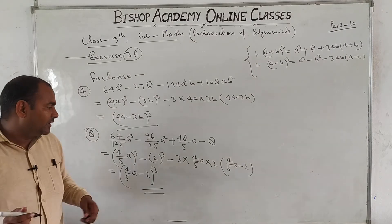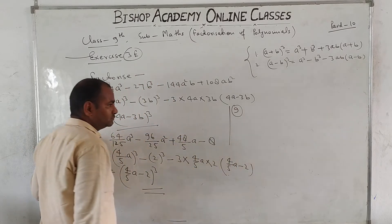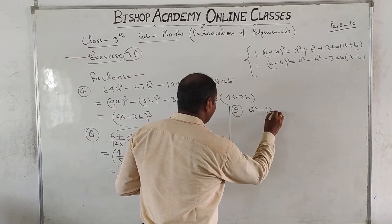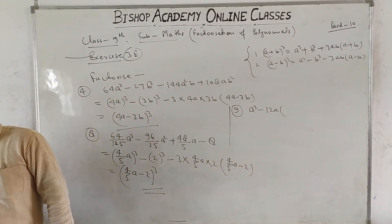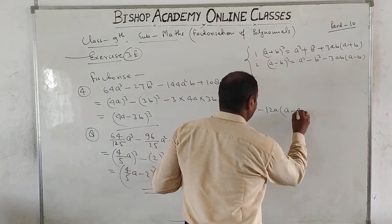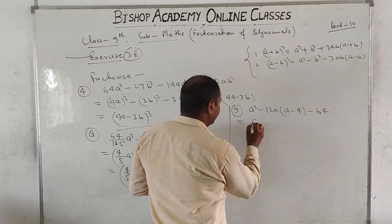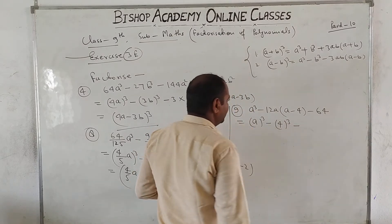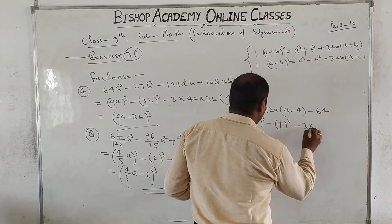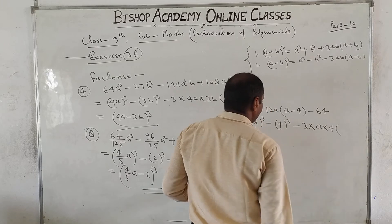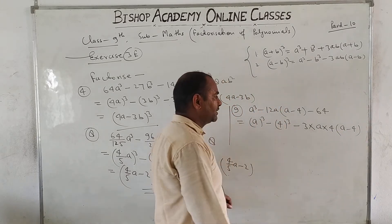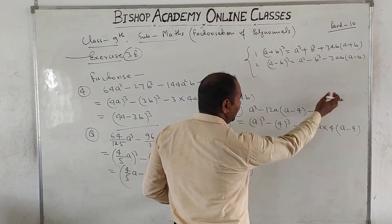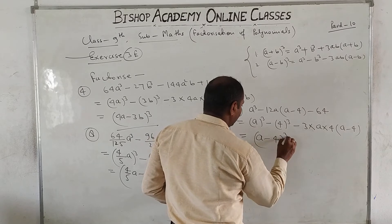Next, question number 9: Factorize a cube minus 12a(a minus 4) minus 64. We recognize a cube and 64 as a cube and (4) whole cube. Using a cube minus b cube formula: minus 3ab, where a's value is a and b's value is 4, in bracket (a minus b), that is (a minus 4). Multiplying to check: 3 times 4 is 12, giving 12a. So using the formula, a cube minus b cube minus 3ab(a minus b) gives (a minus 4) whole cube as the result.